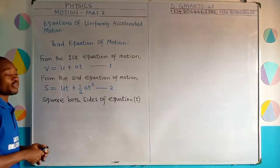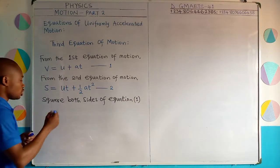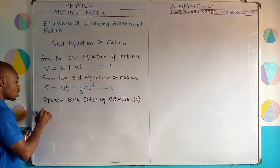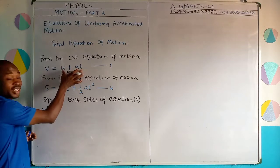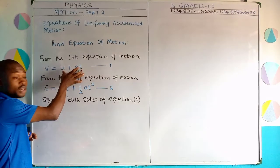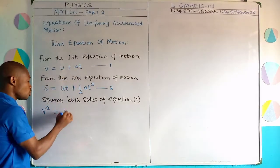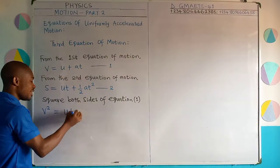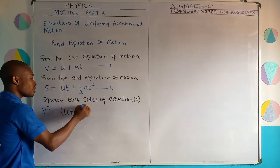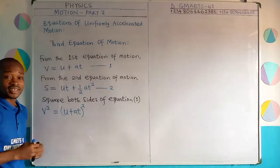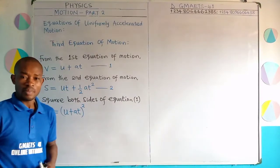So in squaring both sides of equation one, this is what I do. It's going to be V squared equal to — pick these two terms together, which is U plus AT, and then square it outside. This is how we square both sides.